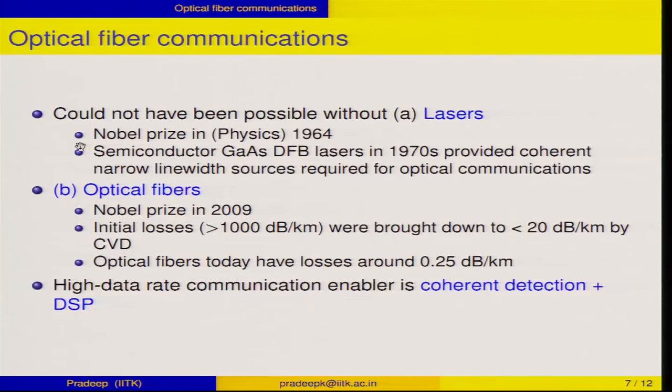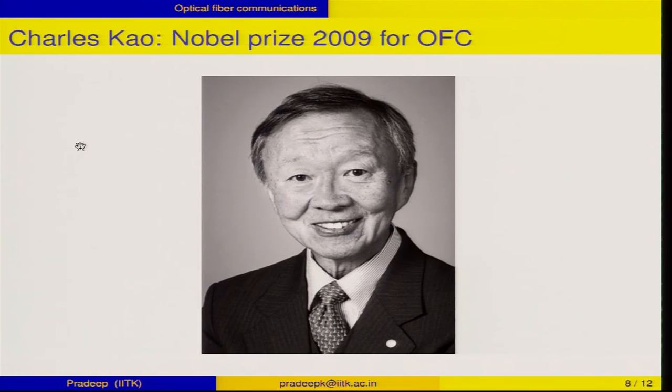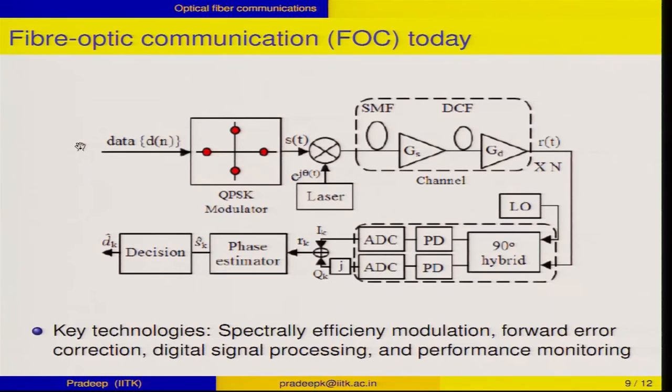Today, high data rate communication is enabled by two other technologies: coherent detection and digital signal processing. The importance of optical fiber communications was recognized by the Nobel committee, and the Nobel Prize for 2009 was awarded to Charles Kao for his work on optical fiber communication. Today, the structure of optical fiber communication involves mapping data using modulation technology, up-converting it to the optical domain by mixing with a laser, passing through a channel, and then at the receiver using a local oscillator to coherently detect, digitize, and perform signal processing to recover the data.